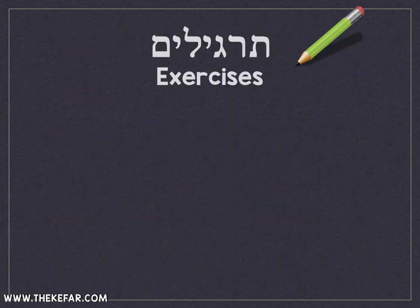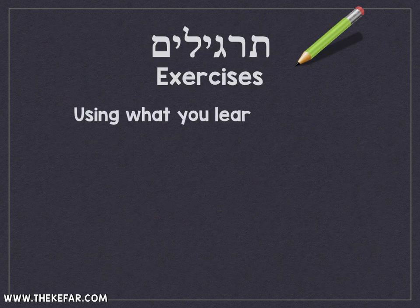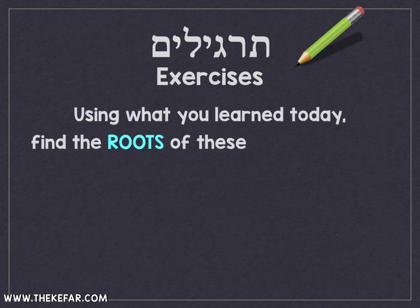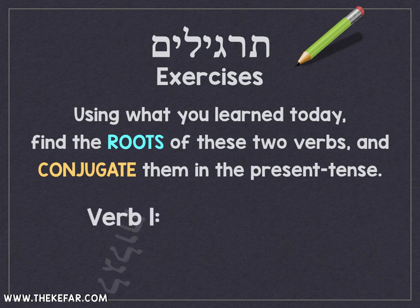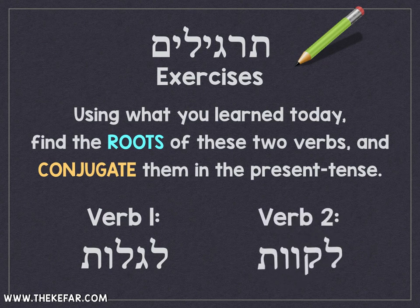Your exercise for this week is to conjugate two Pi'el Vav-Tav verbs using the sound patterns we just learned. Your first verb is Legalot, which means to reveal or to uncover. Your second verb is Lekavot, which means to hope. So you have Legalot and Lekavot as your exercise verbs.